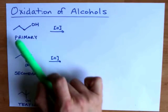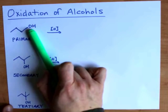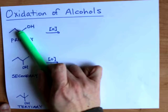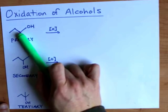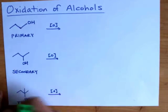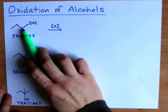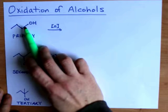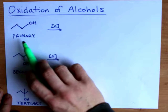The way that we do that is to take a look at the carbon that has the OH on it. That's this carbon in this case. And how many carbons is it connected to? In this case, that carbon that has the OH is only connected to one other carbon. That makes it primary.